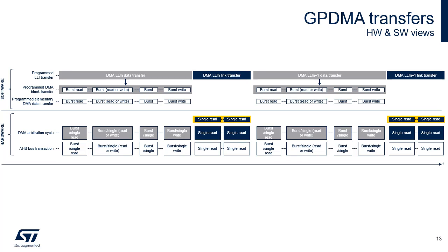Each burst or single data transfer requires an arbitration cycle and a transfer over the AHB master port. The link transfer is composed of single data reads, each of them requiring an arbitration cycle and a transfer over the AHB master port.